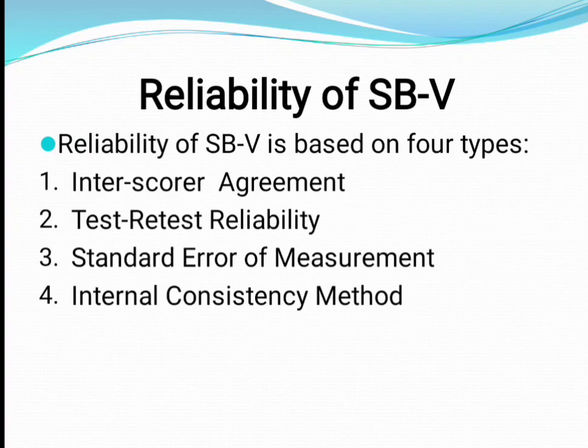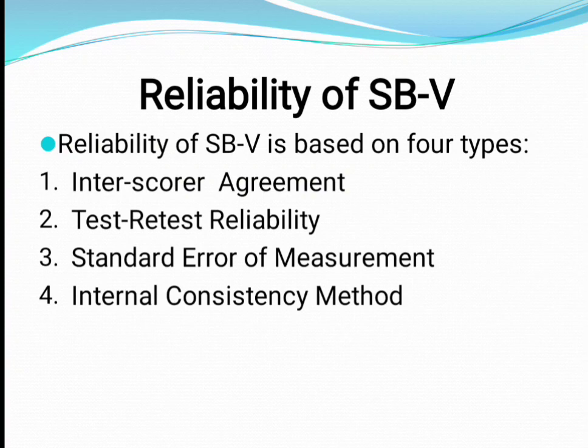The SB5 manual includes all types of reliability. Interscorer reliability, test-retest reliability, standard error of measurement, internal consistency, and split-half methods are used to check the reliability of SB5. The reliability range was 0.9 and above.